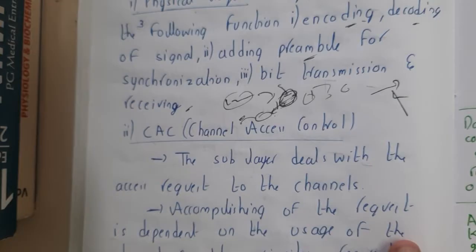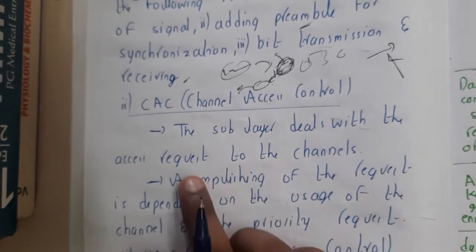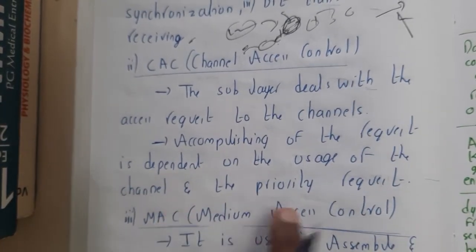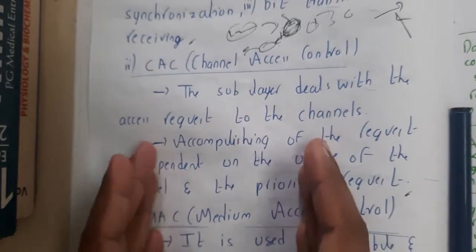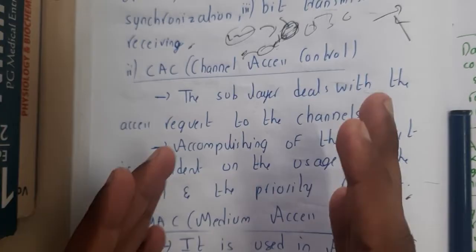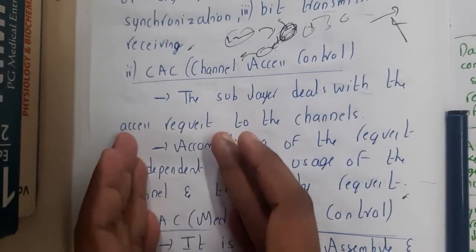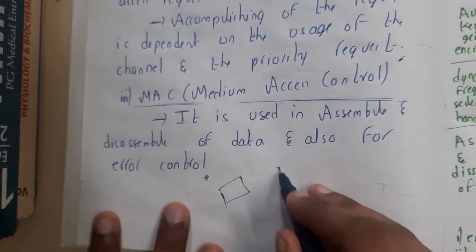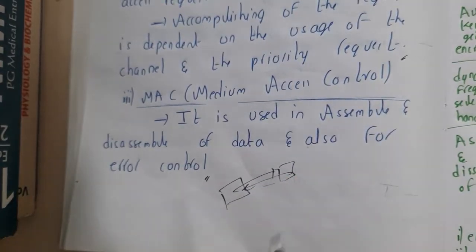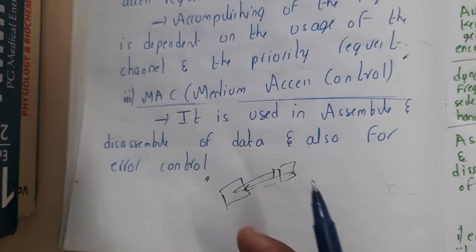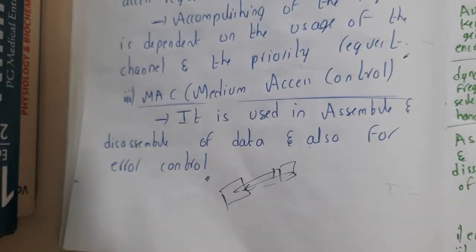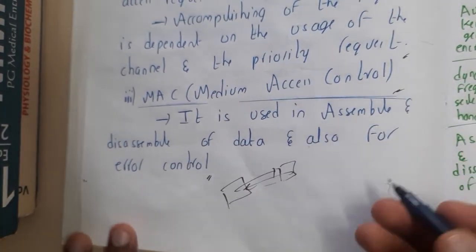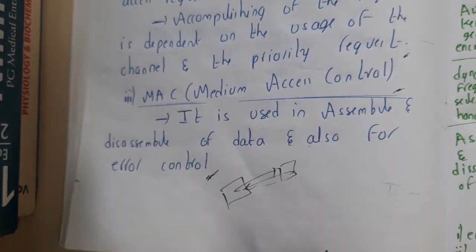The Channel Access Control (CAC) sub-layer deals with access requests to the channel. Whether a request is granted depends on channel usage and priority. It can manage channel access in a fixed or dynamic manner. The Medium Access Control (MAC) layer handles packet assembly and disassembly, error checking, and collision control — similar to internet-level communication.